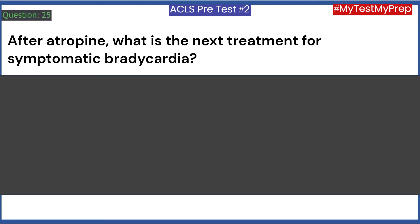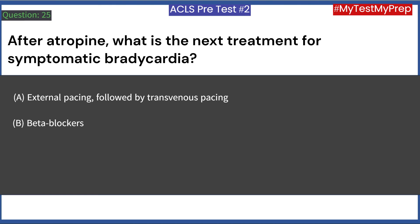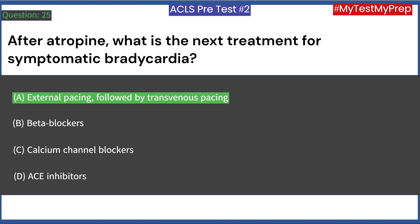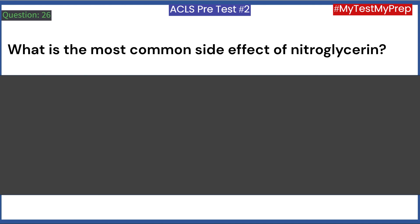After atropine, what is the next treatment for symptomatic bradycardia? A. External pacing, followed by transvenous pacing. B. Beta blockers. C. Calcium channel blockers. D. ACE inhibitors. Answer: A. External pacing, followed by transvenous pacing.